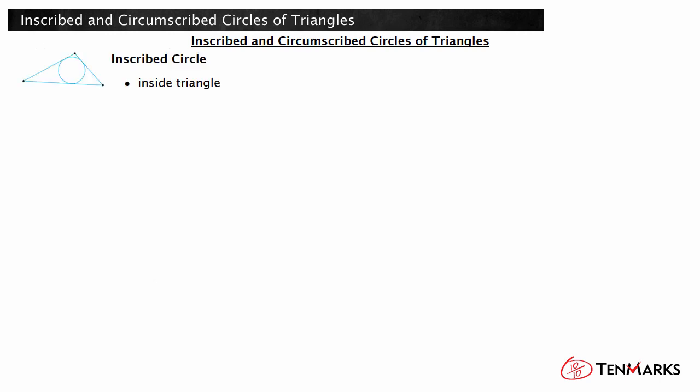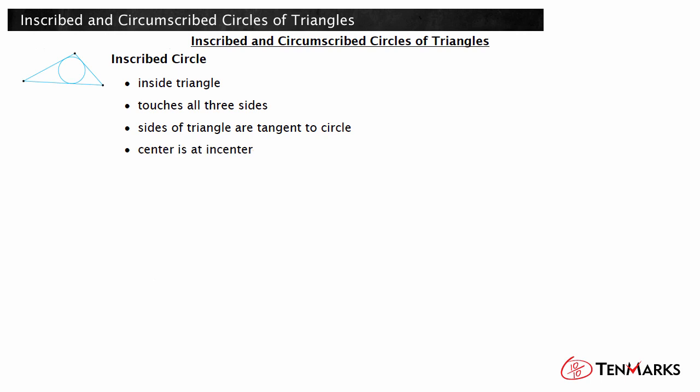An inscribed circle of a triangle is the largest circle that can be drawn inside the triangle. The inscribed circle will touch all three sides of the triangle, and all three sides will be tangent to the circle. The center of the inscribed circle will be at the incenter of the triangle, which is found at the intersections of the angle bisectors of the triangle angles.